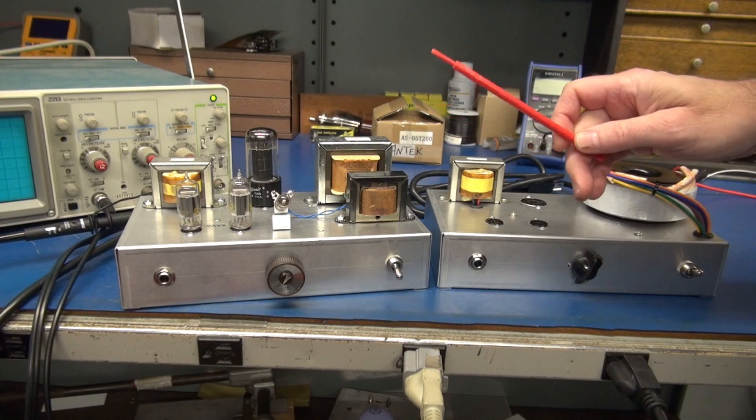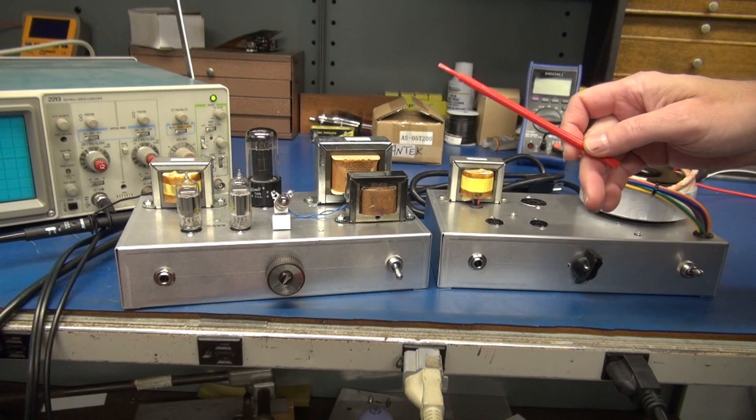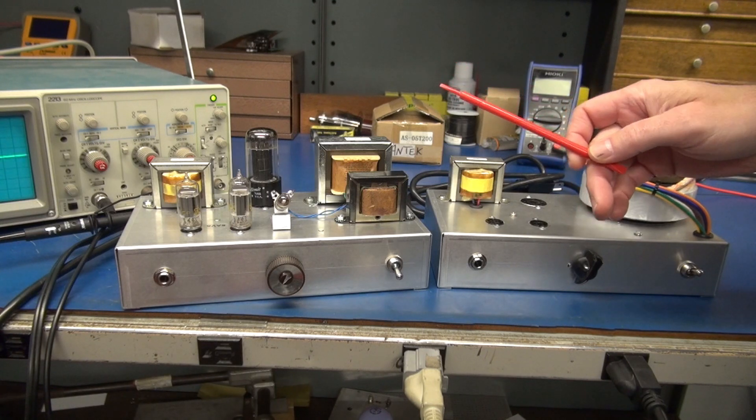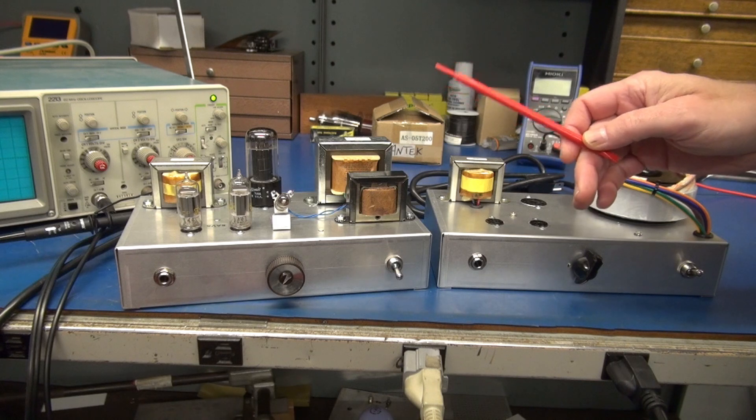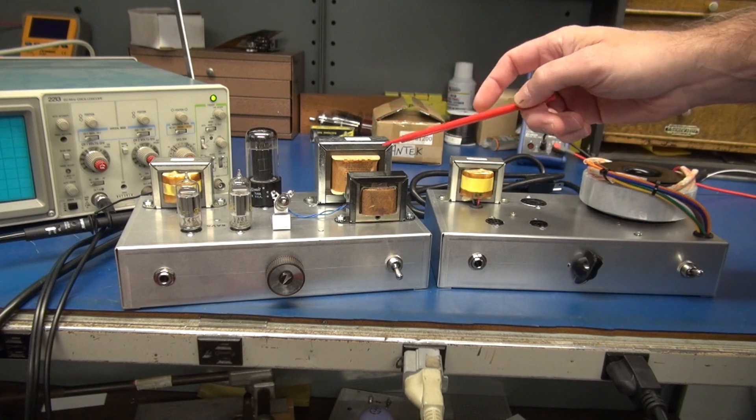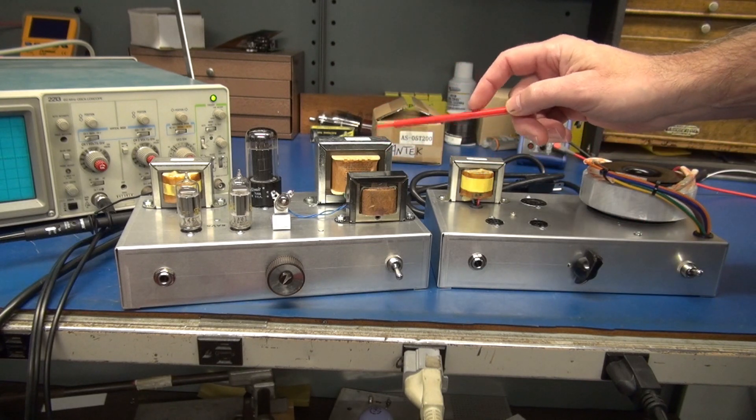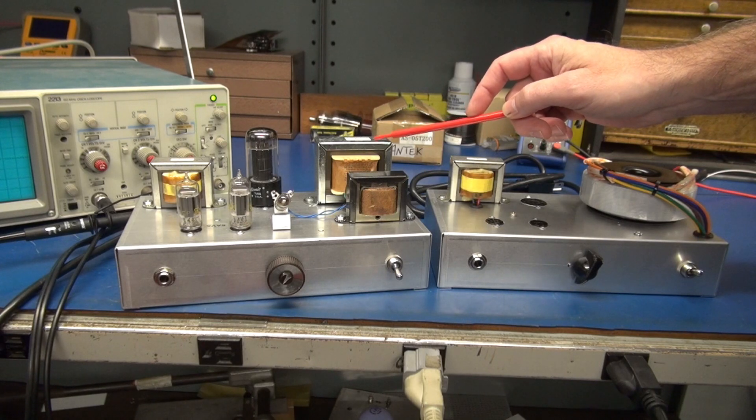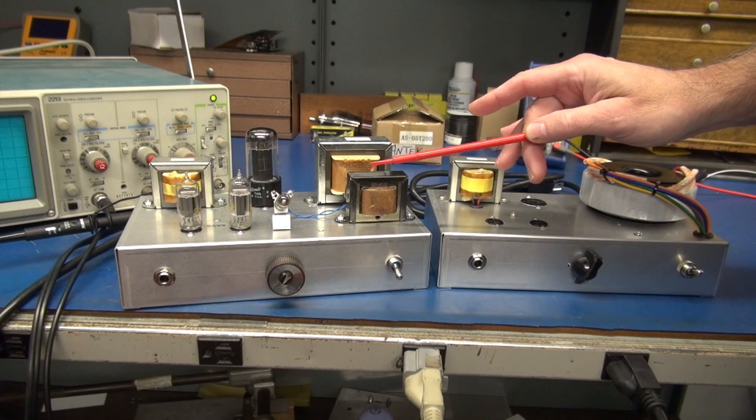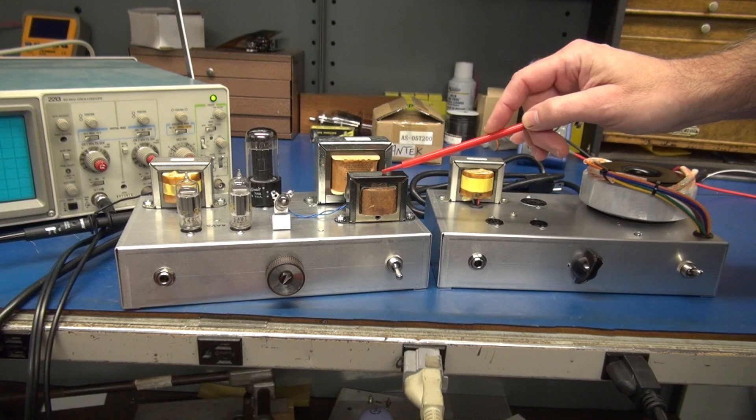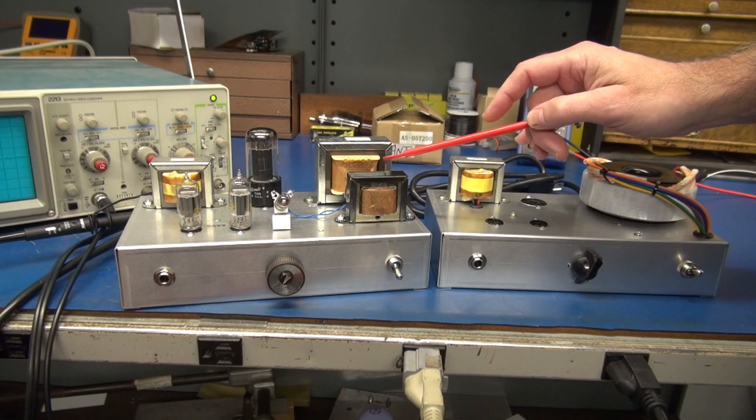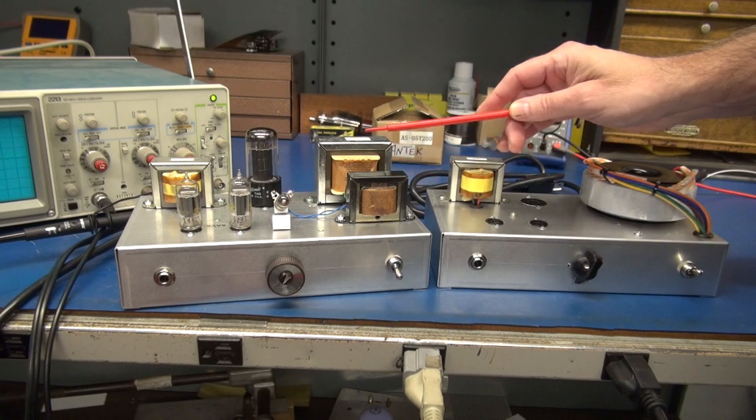These amps were developed around low-cost power transformers. The goal is to provide hobbyists and builders options to combat the high cost of iron. First, the Triad: it features an N68X isolation transformer for high voltage and a 6.3 volt 1.2 amp type for filaments. Total cost for both transformers: $30.